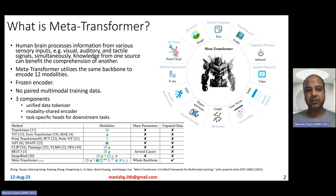Meta Transformer utilizes the same backbone — a transformer backbone — to encode 12 different modalities. So multimodal is no longer just about image and text; it's about 12 different modalities.